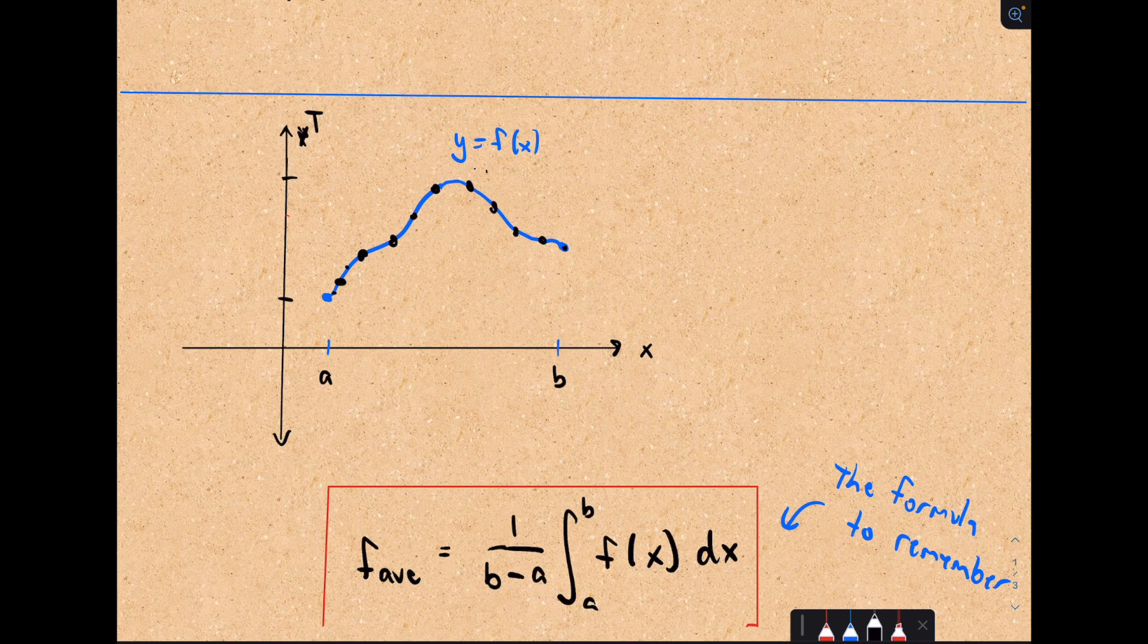What we're going to do is use more and more points. We'll add up even more points and divide by that number to get an updated average. Then we're going to use even more points. We're letting the number of points go to infinity, taking a limit as the number of points goes to infinity.